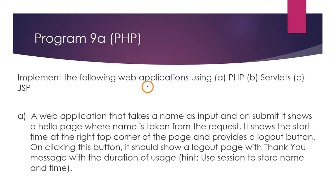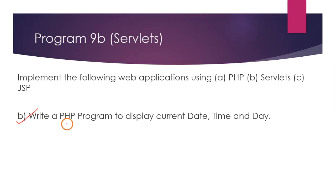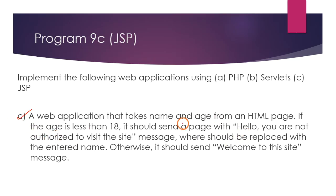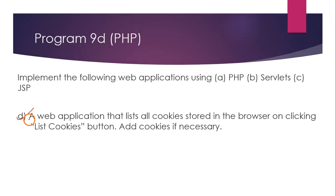Program nine has four sub-programs. The first displays a text field that takes a person's name as input. The second uses PHP to display the current date, time, and day. The third asks for a person's name and age — if age is greater than 18, display one message, otherwise display another. The fourth sub-program uses PHP with a concept called cookies.